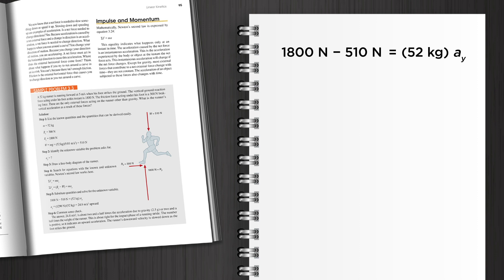Subtracting 510 newtons from 1,800 newtons, we have 1,290 newtons on the left side. We further simplify by dividing both sides by 52 kilograms, leaving vertical acceleration equals 1,290 newtons divided by 52 kilograms.